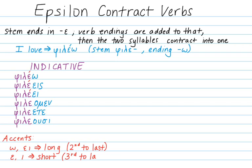And if the last syllable is short — that is, it contains an epsilon or an iota — then the accent goes on the third to last syllable. This applies to our last three: phileomen, phileete, and phileusi.